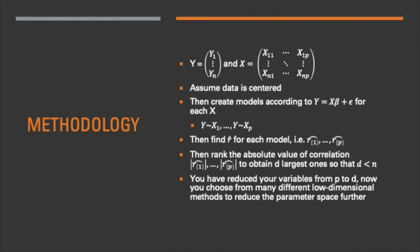Then we create models by regressing y over each xj individually. Then we find the correlation coefficients of each model. For demonstration purposes, we use the Pearson correlation coefficient r. At this point, you will have p correlation coefficients. You will then rank them by taking their absolute values to obtain the d largest correlation coefficients. Here you want d to be less than n. Now you have reduced x from an n by p matrix down to an n by d matrix by using sure independent screening. Now you can choose from the many low-dimensional methods discussed earlier to reduce the parameter space further.